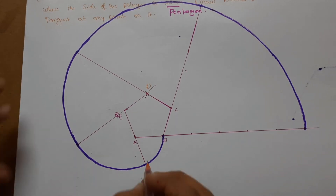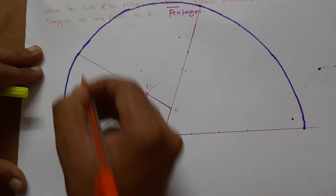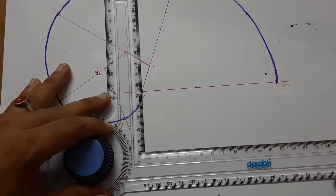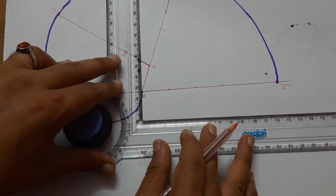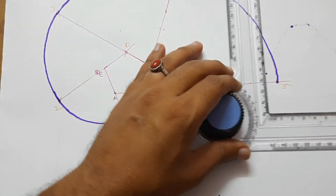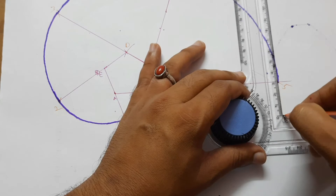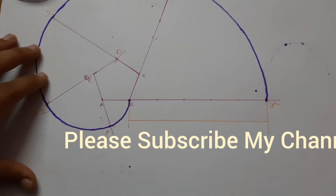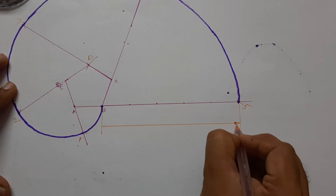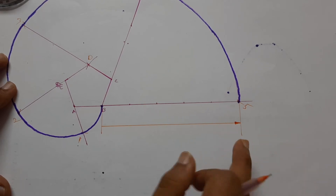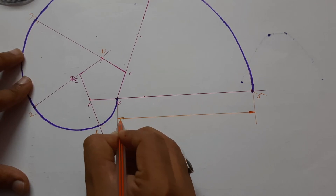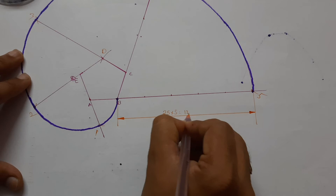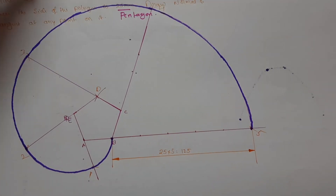This is the involute for a pentagon. The points added on the curve — take them as point 1, 2, 3, 4, 5. Now give dimensioning. This is 25 into 5 = 125 mm. This is the indication — this is the completed involute.